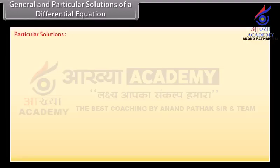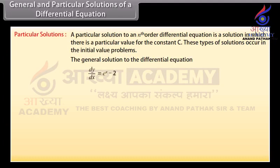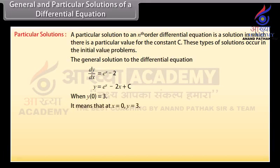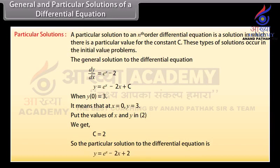Particular solutions. A particular solution to an nth order differential equation is a solution in which there is a particular value for the constant c. These occur in initial value problems. Given the general solution y = e^x − 2x + c, when y(0) = 3, at x = 0 y = 3. Substituting into the equation gives c = 2. So the particular solution is y = e^x − 2x + 2.